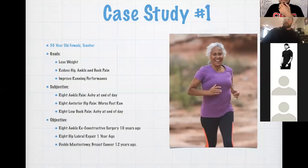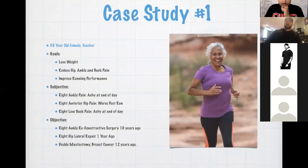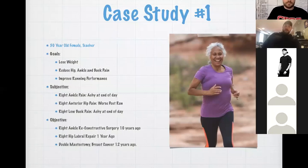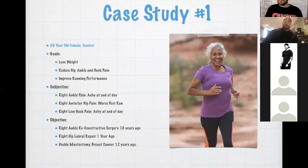She runs two or three times a week, about three miles. She enjoys running more than lifting — she's lifting because she knows it's good for her. She wants to improve running performance, be in slightly better shape, and do those things without pain. Subjectively, she has right ankle pain that's achy at the end of the day, sometimes with swelling, right anterior hip pain that's worse post-run, and right lower back pain, also achy by end of day.